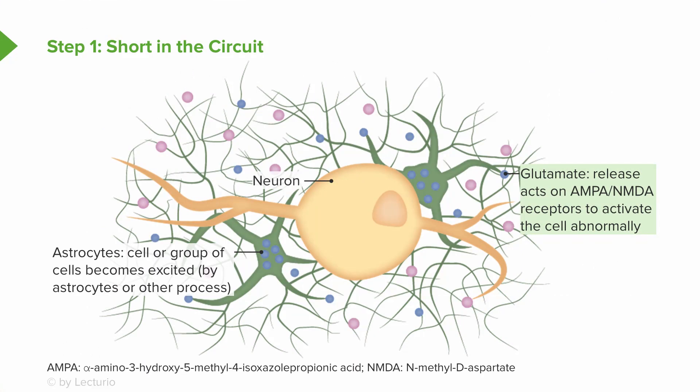Astrocytes bind up the glutamate that's released by neurons, recycle that glutamate, and sometimes can release glutamate of their own accord. Glutamate is the excitatory neurotransmitter. As a result of this lack of scavenging of glutamate and increased secretion of glutamate, we see increased excitation of a neuron. This results in increased calcium signaling and neurons become hyper-excitable. That's the initial short in the circuit that can occur anywhere in the brain and drive a seizure to occur.